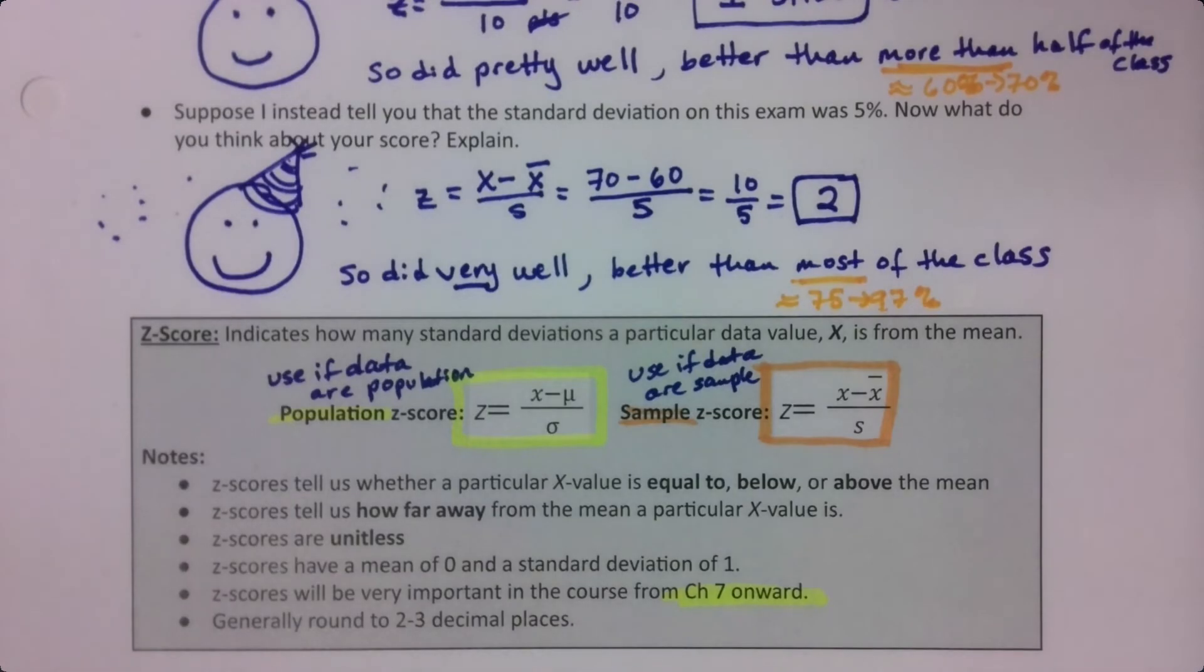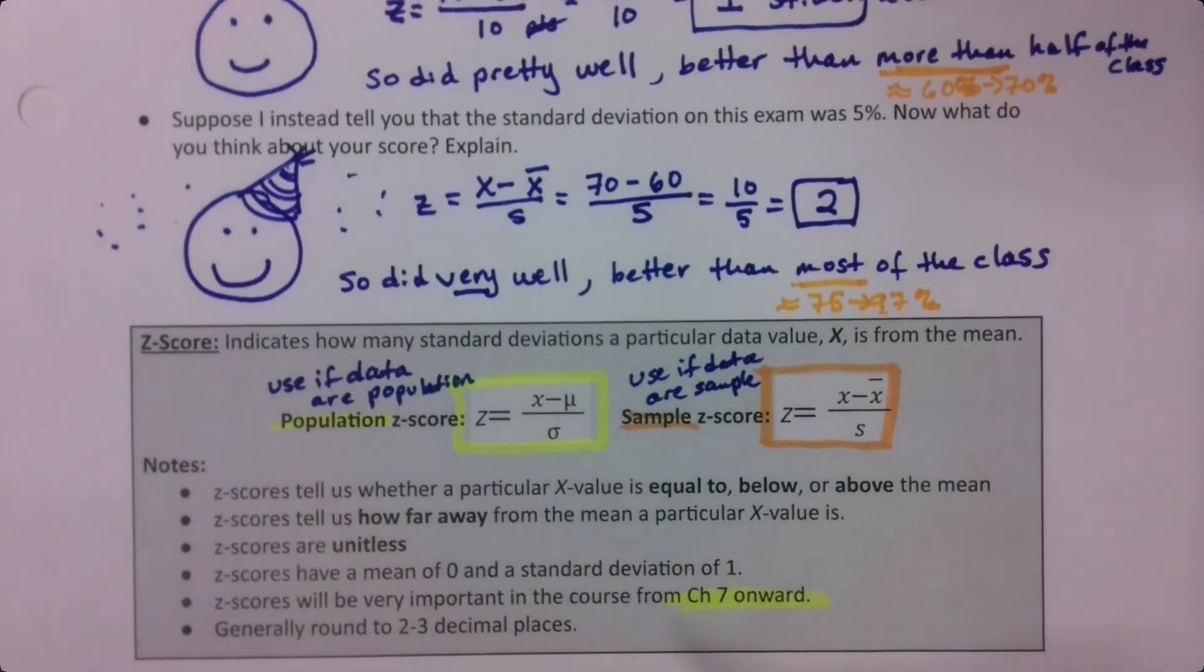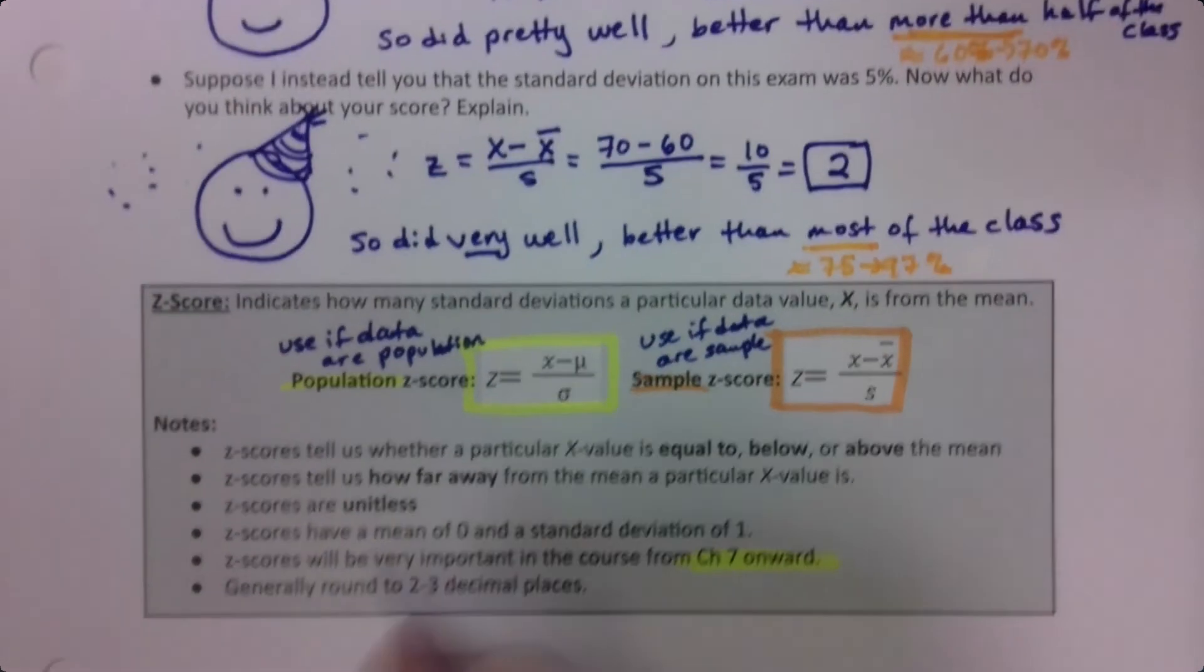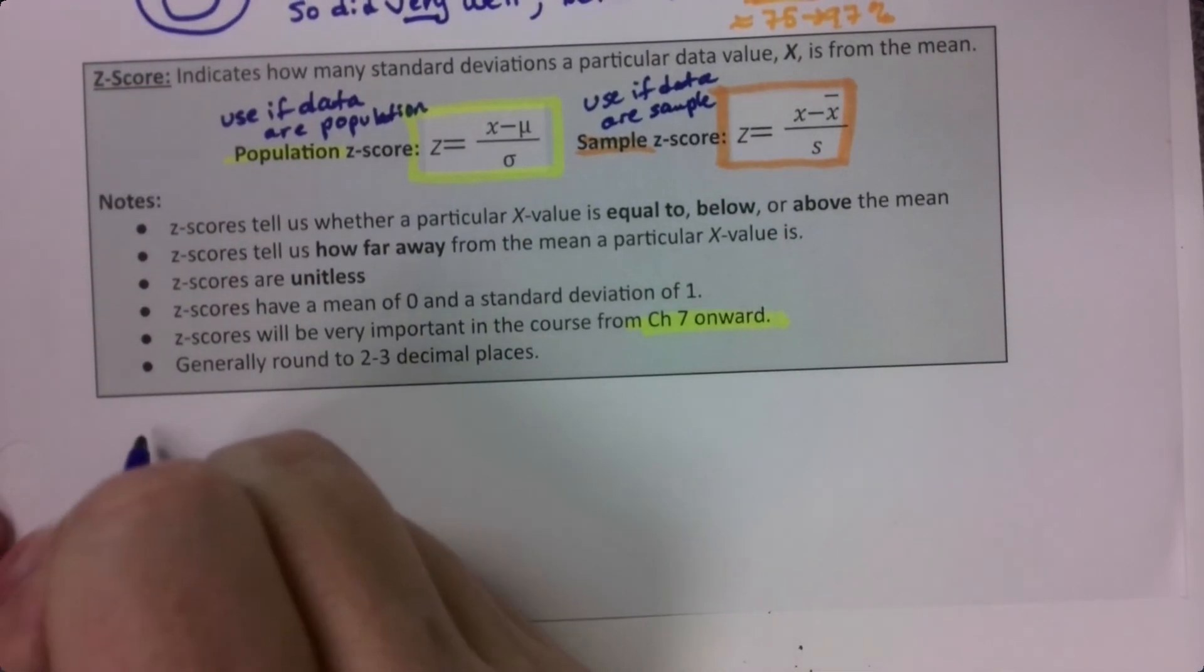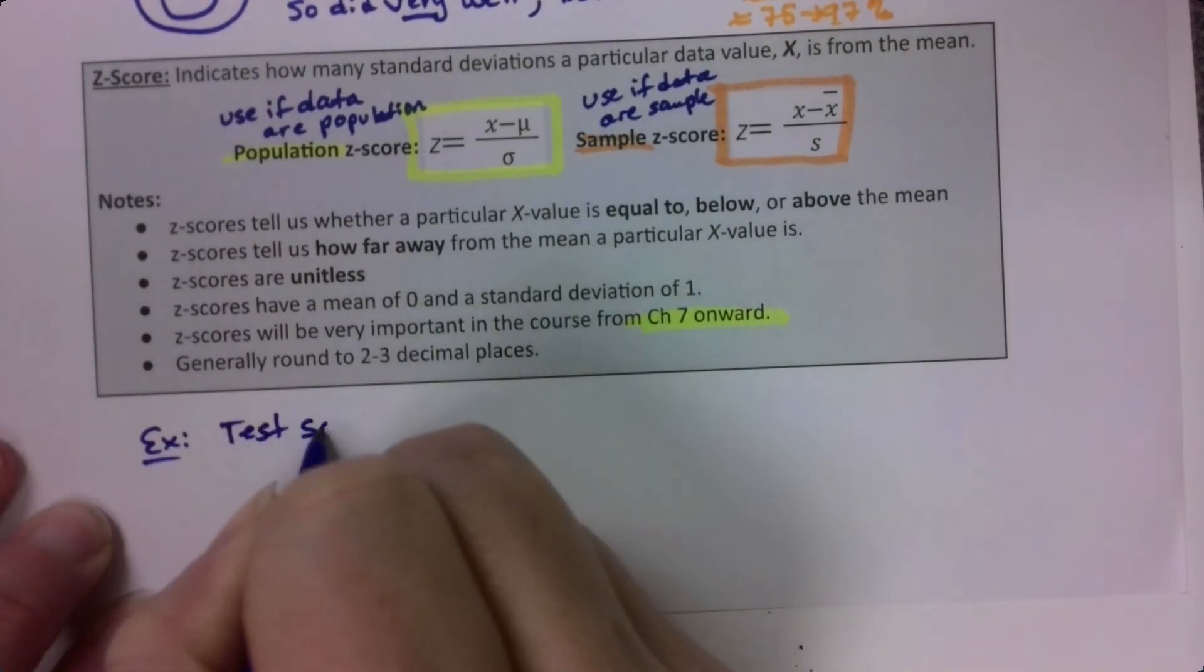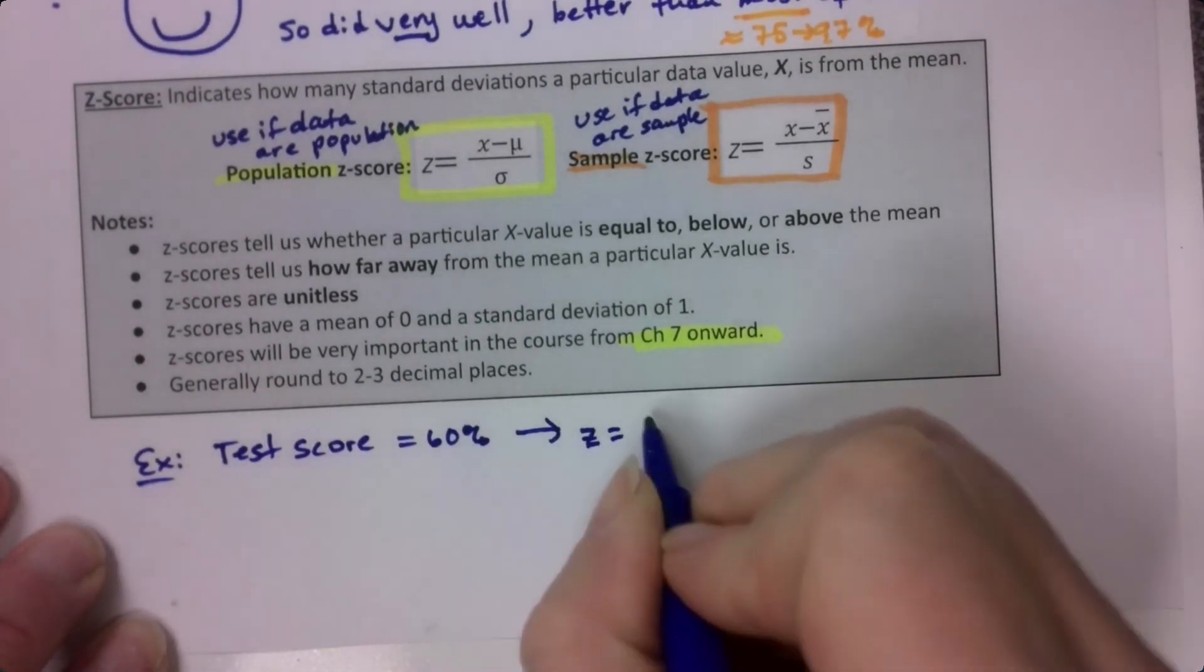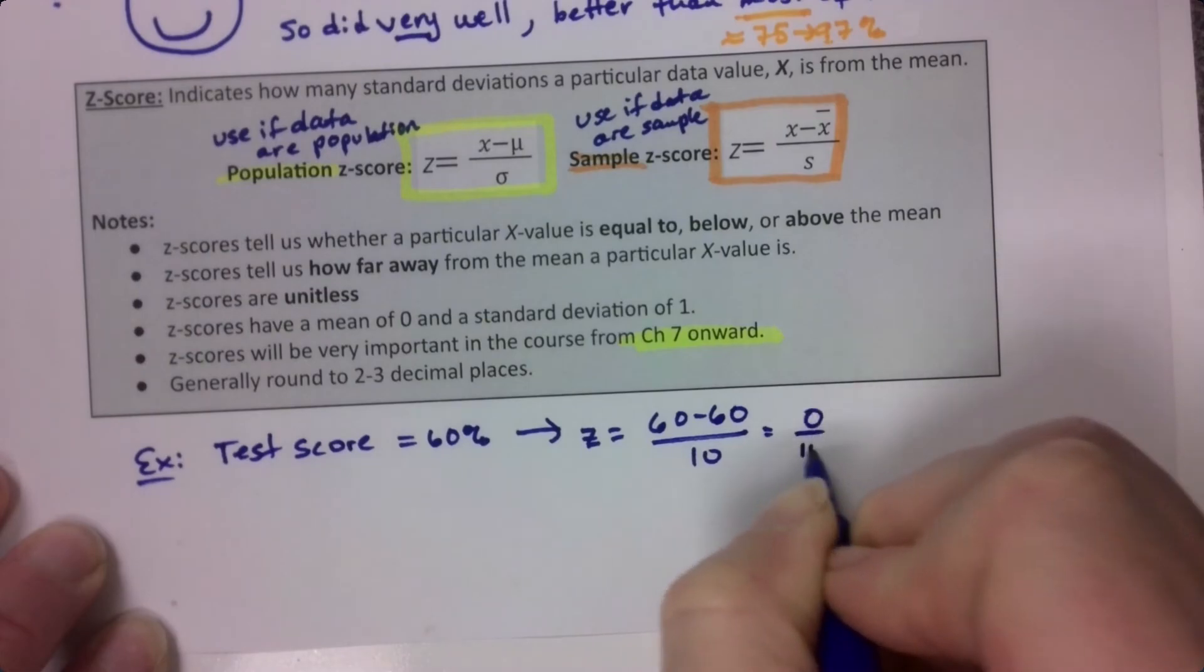Now, before we leave z-score behind, there's a couple other things to note down here. What happens if you score the mean? Let me give you an example over here. So if you had a value, if your test score was 60%, and the average was 60%, then your z-score would be 60 take away 60 over 10, which is 0 divided by 10, which is 0.